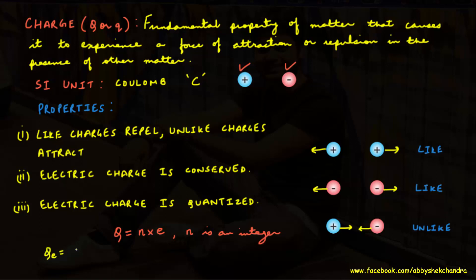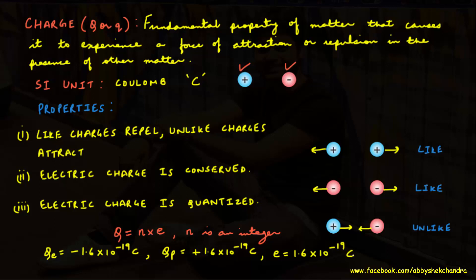The charge on an electron is minus 1.6 × 10⁻¹⁹ coulomb and the charge on a proton is plus 1.6 × 10⁻¹⁹ coulomb. The magnitude of the electronic charge is denoted by e, so e = 1.6 × 10⁻¹⁹ coulomb. Note that elementary particles called quarks are an exception — they carry charges that are integral multiples of one-third the charge on an electron or proton.